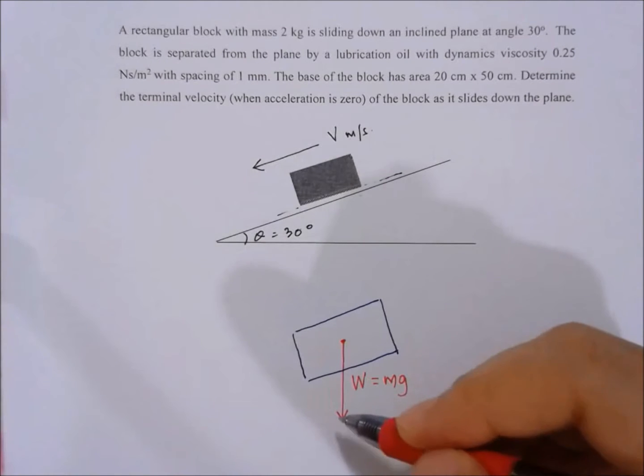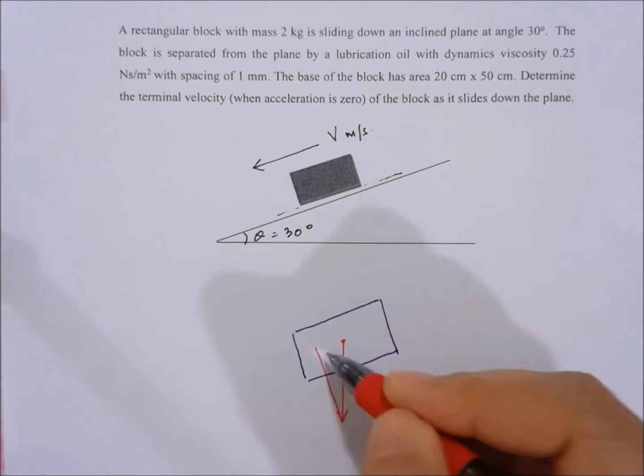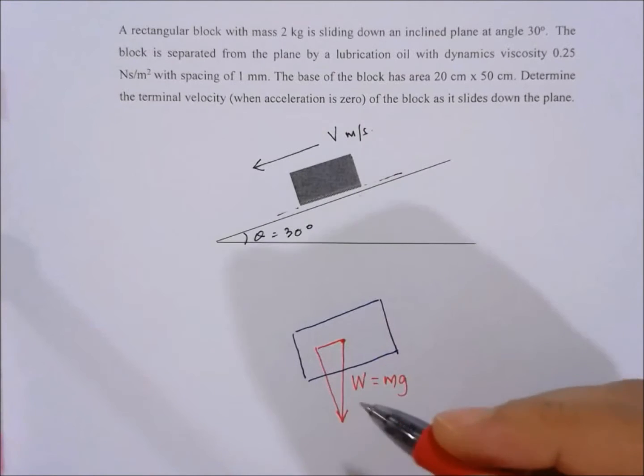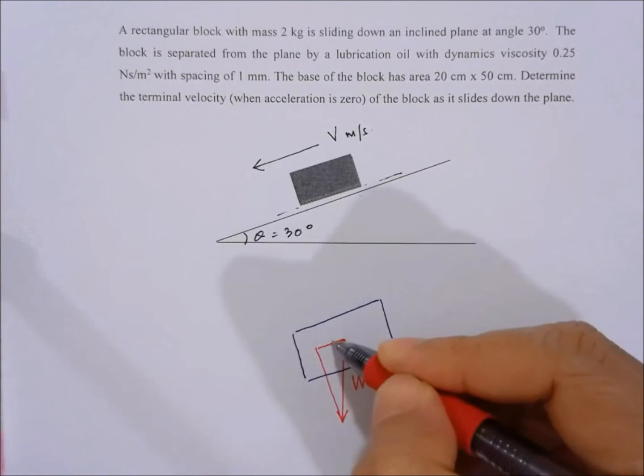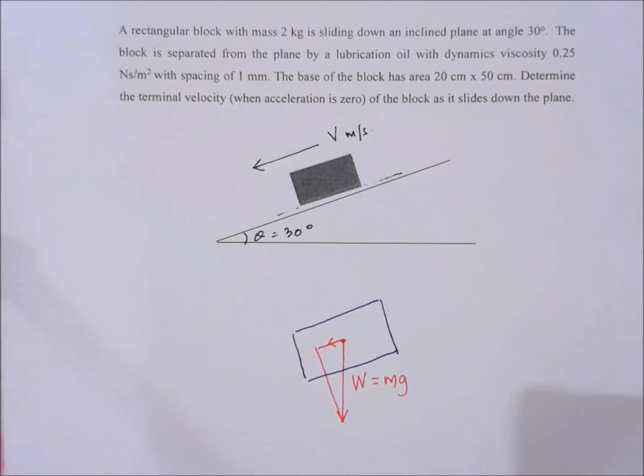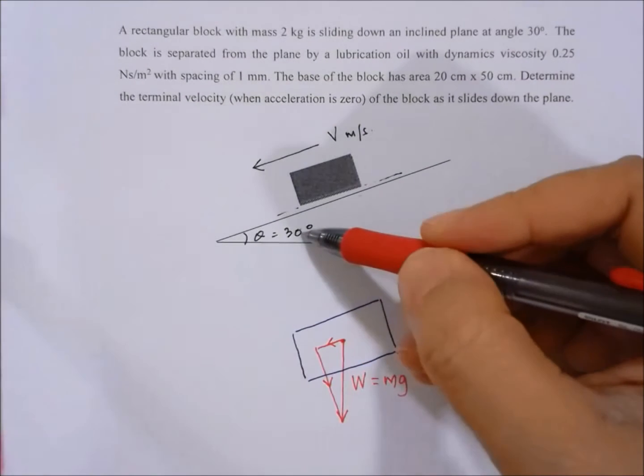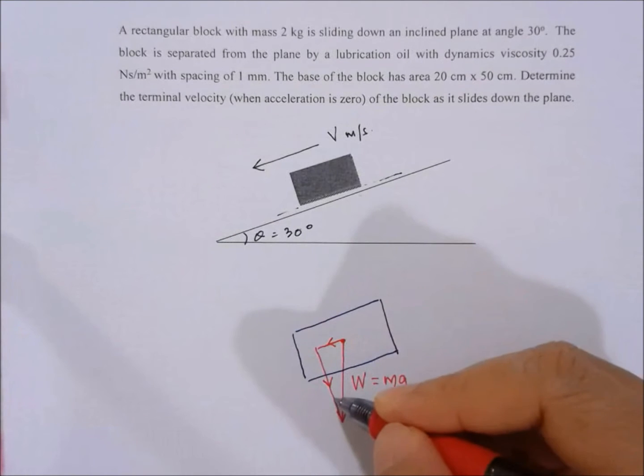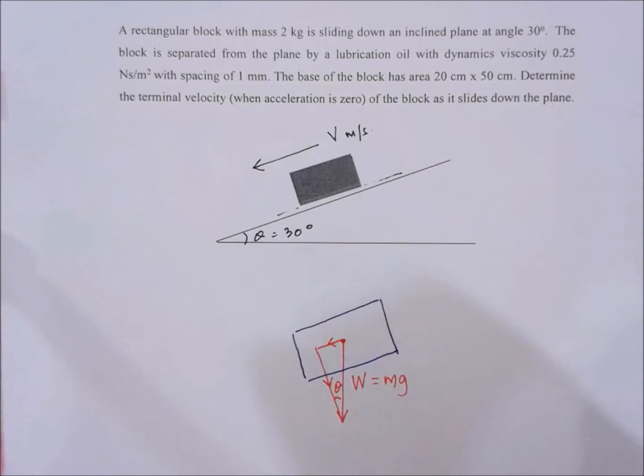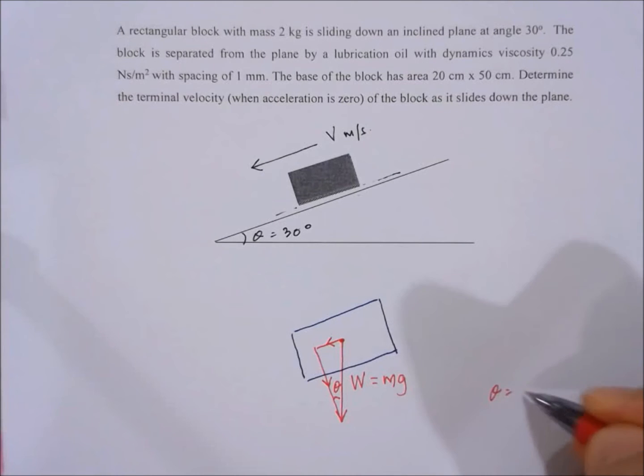This force can be resolved into two perpendicular components: one is parallel to the ramp and the other one is perpendicular to the ramp. Since this angle is 30 degrees, this one is also equal to theta which is equal to 30 degrees.